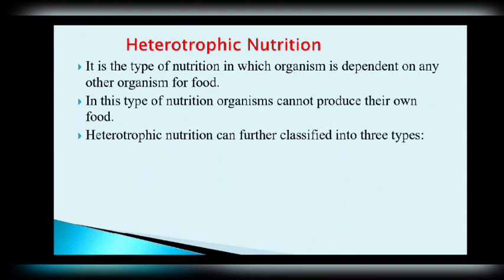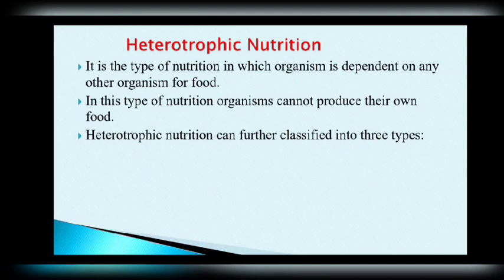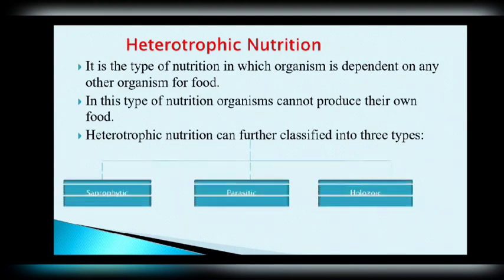Our next topic is heterotrophic nutrition. It is the type of nutrition in which an organism is dependent on another organism for food. Hetero means dependent. The organism cannot make its own food, which is why it is called heterotrophic nutrition. Heterotrophic nutrition can be further classified into three types: saprophytic, parasitic, and holozoic.